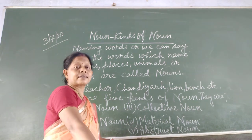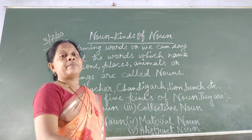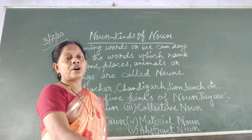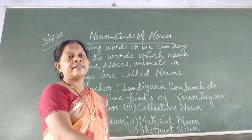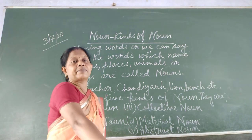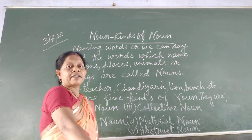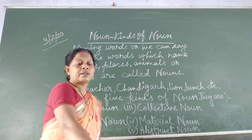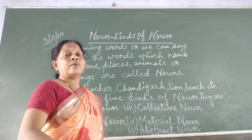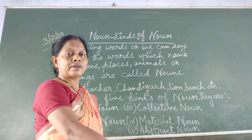Names of things: desk, bench, book, copy, pencil, pen, chalk, duster, fan — everything. These are the examples of things. In short, we can say that nouns are naming words.